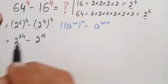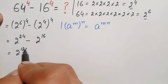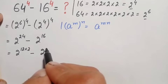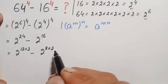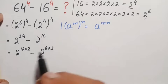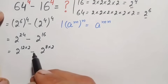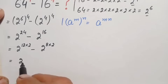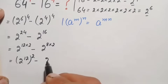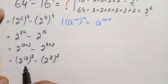Next, we rewrite the powers: 2 raised to power 24 can be written as (2 raised to power 12) whole squared, and 2 raised to power 16 can be written as (2 raised to power 8) whole squared. So the expression becomes (2^12)^2 minus (2^8)^2.